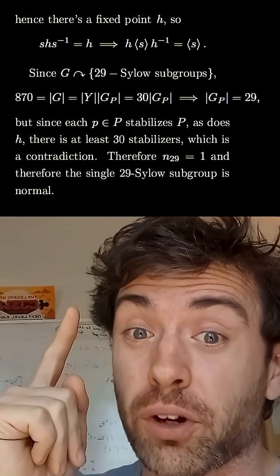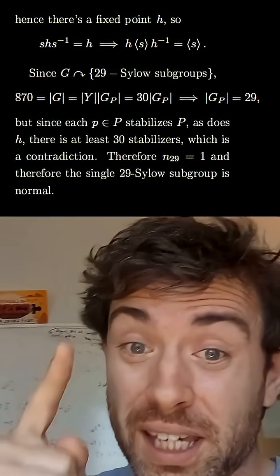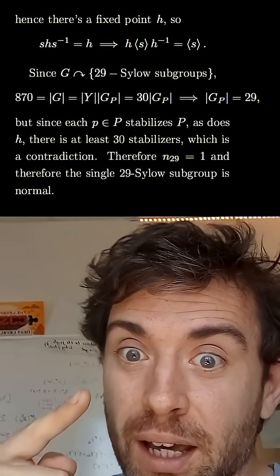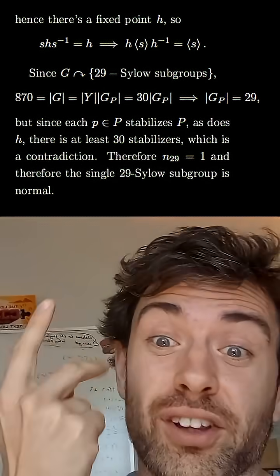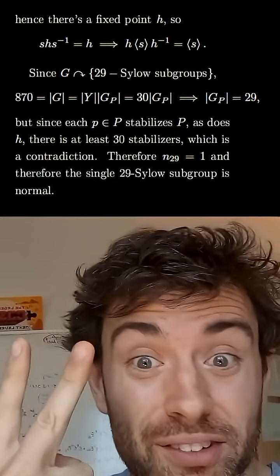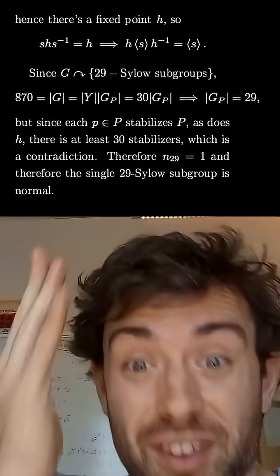But this is a problem because we know that each of the 29 elements of P have to stabilize that group under conjugation. But we just figured out that there's at least one other element that stabilizes the group. So that's 30, and there's our contradiction.